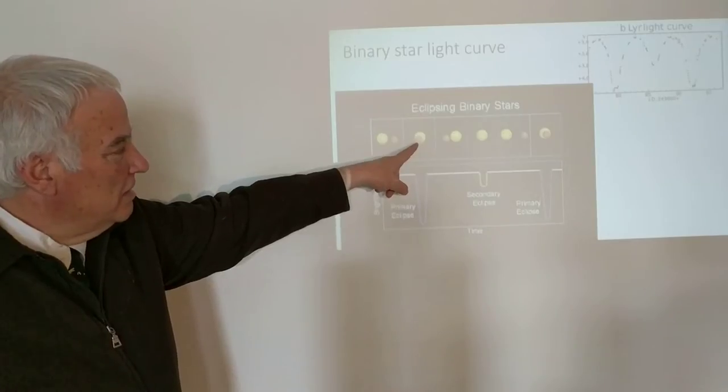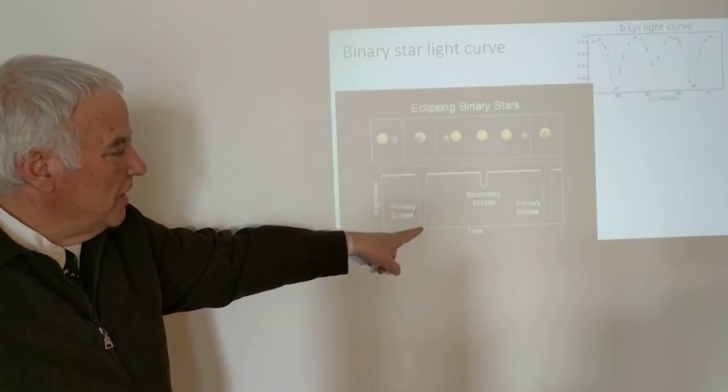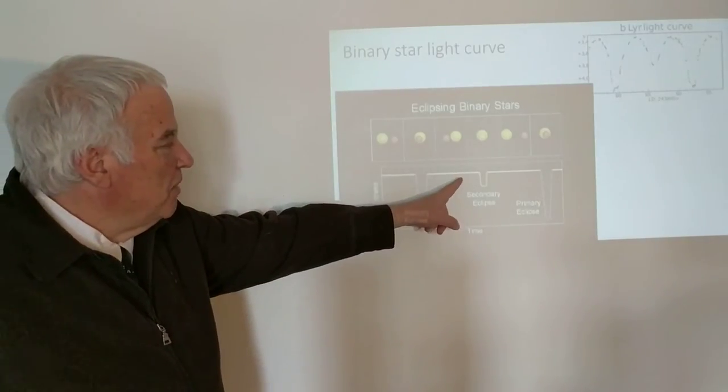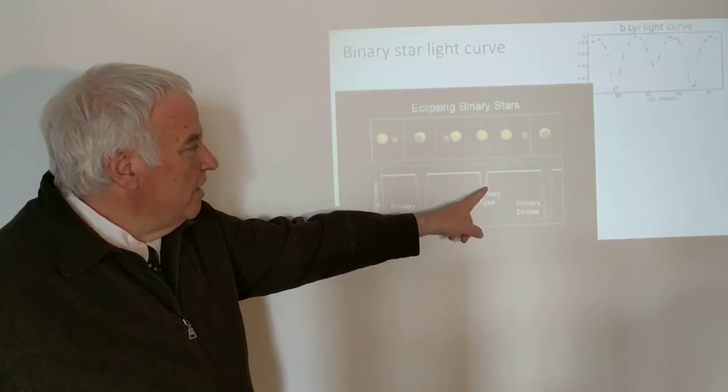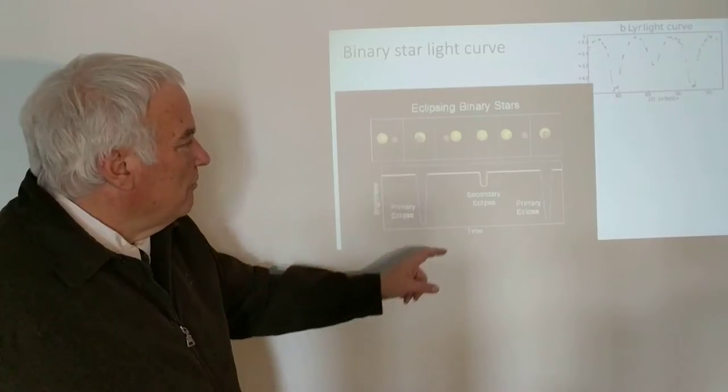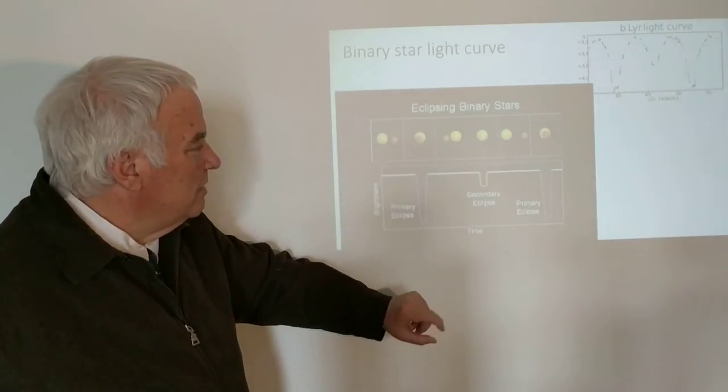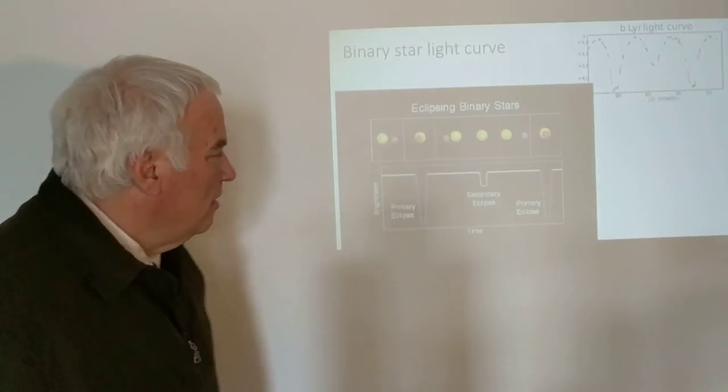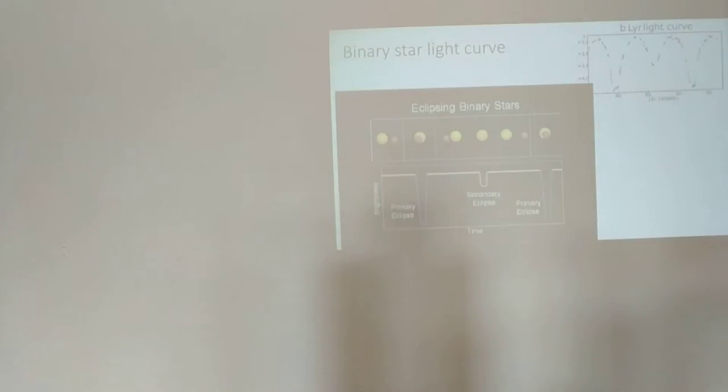The smaller red star is moving in front of the yellow star, and the brightness drops dramatically. Then after the eclipse we have both stars again. During the secondary eclipse, the other star is in front and there is a lower depth of eclipse. This is how we can tell not only the period of the orbit, but the sizes of the stars and also the semi-major axis, which is important in determining the mass.